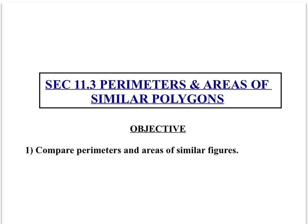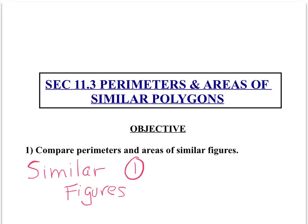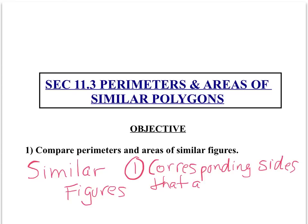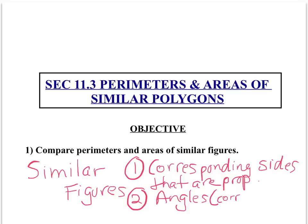Before we start, we should become familiar with the understanding of what similar figures are. We know that similar figures are figures that have corresponding sides that are proportional, and all the corresponding angles are congruent.